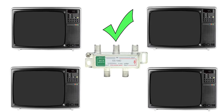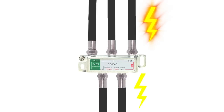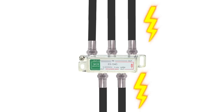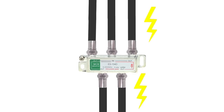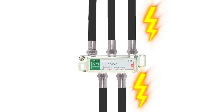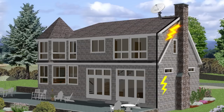Another feature to look for is a power passing port. The power passing port allows DC power through the splitter to power inline amplifiers or satellite LNBs. If none of these devices are installed on the coax line, the power pass port is not necessary. However, this will not cause an issue if the splitter has one.